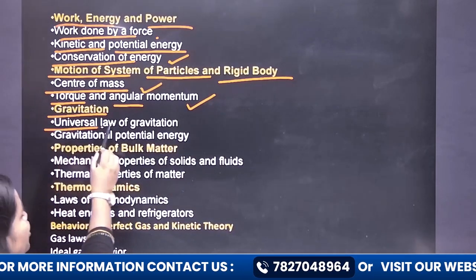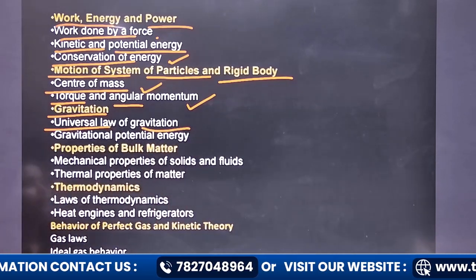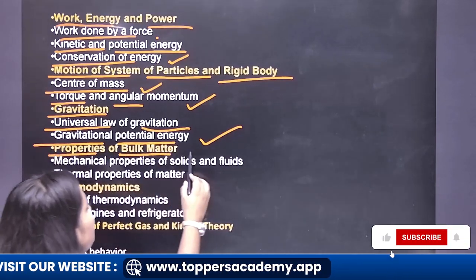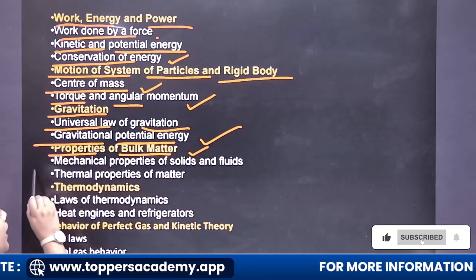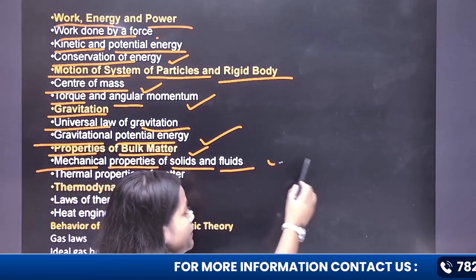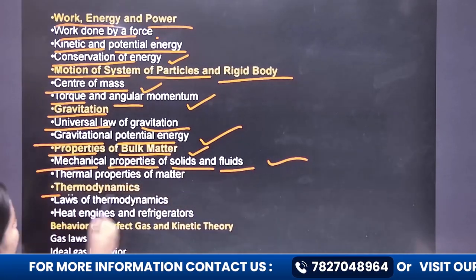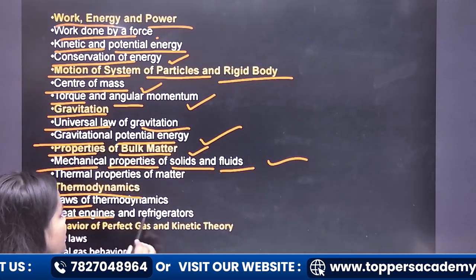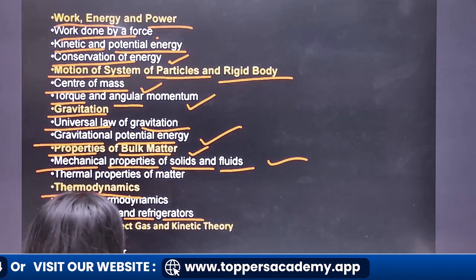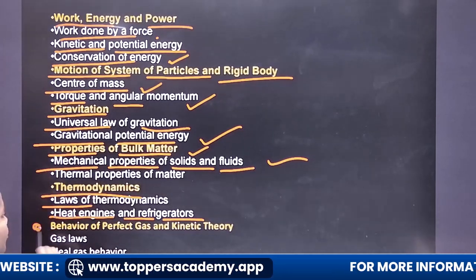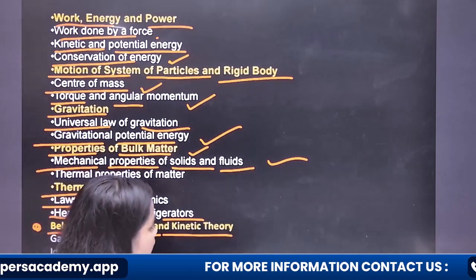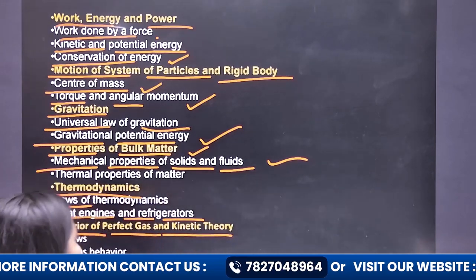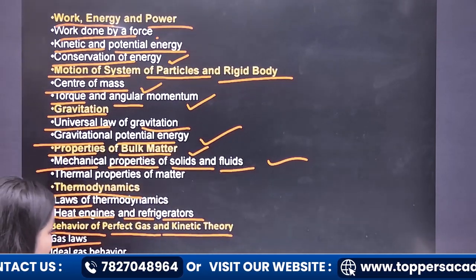You have to learn Gravitation — the universal law of gravitation and gravitational potential energy. Then, Properties of Bulk Matter — mechanical properties of solids and fluids. Then Thermodynamics, covering the laws of thermodynamics, heat engines and refrigerators. The next topic is the Behavior of Perfect Gas and Kinetic Theory — ideal gas behavior and the laws of gas.